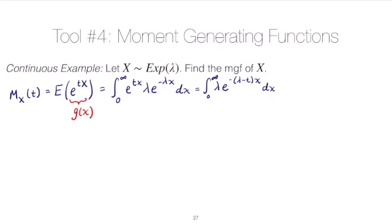You should notice this looks pretty close to the PDF of an exponential. The only problem is there's a lambda down here and there's a lambda minus t up here. If we switched one of them, either this here to a lambda minus t or this here to a lambda, we'd have the PDF of an exponential that would integrate to one.